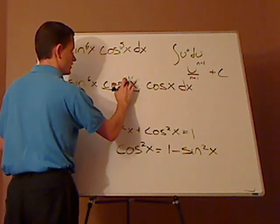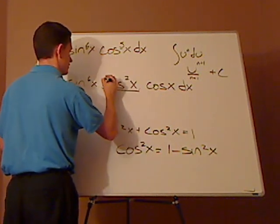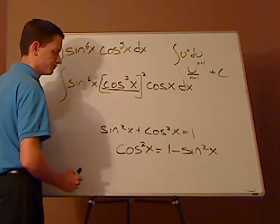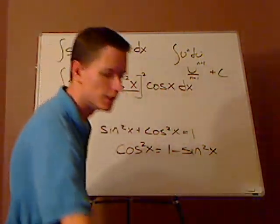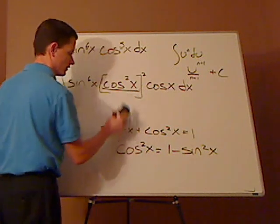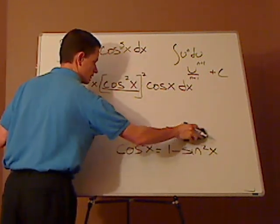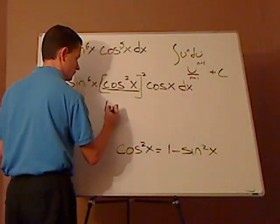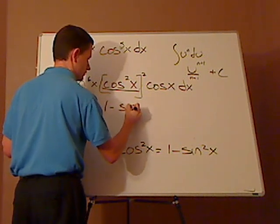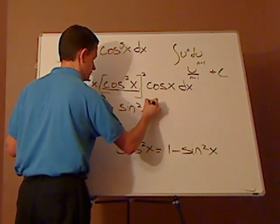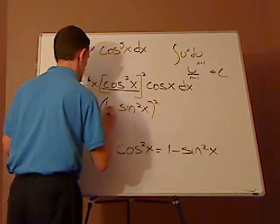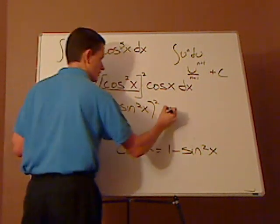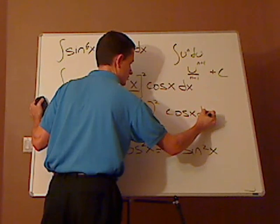So this right here can be rewritten as cosine squared x, which can be rewritten as cosine squared raised to the second power. Then I can simply take this and substitute. So then I have 1 minus sine squared x, parentheses squared, sine to the 6th cosine x dx.